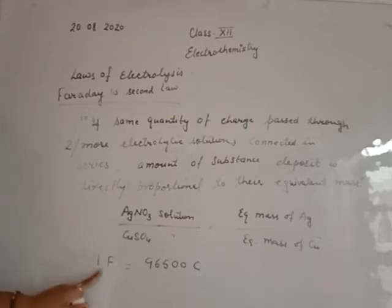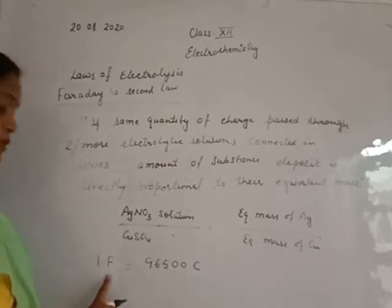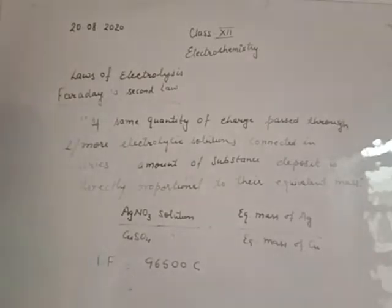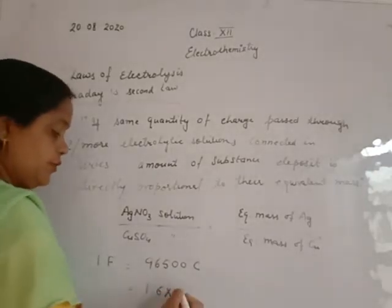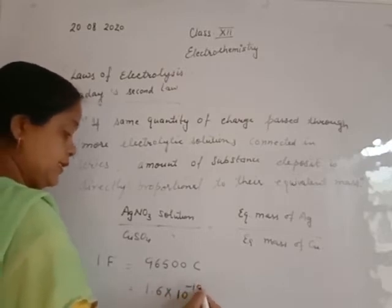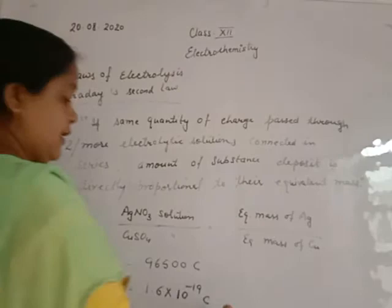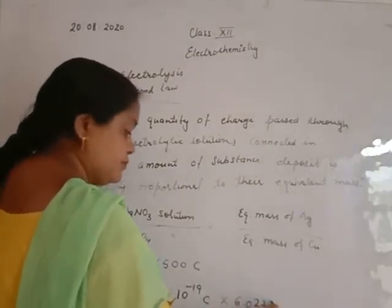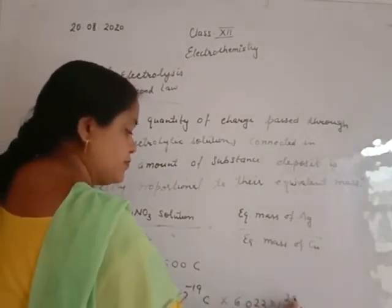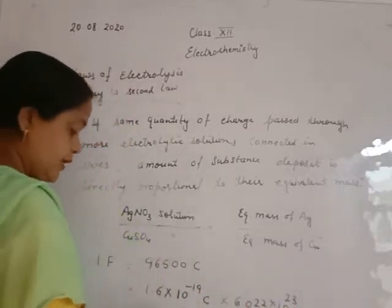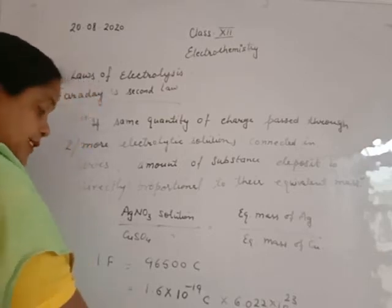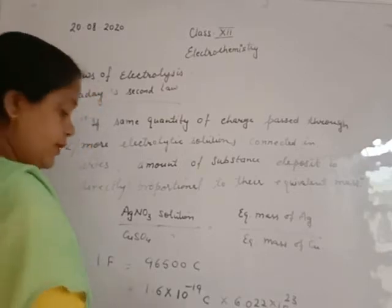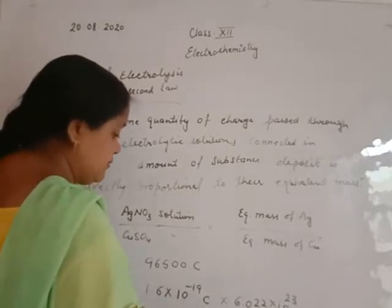The Faraday constant represents the quantity of charge in 1 mole of electrons. The charge of one electron is 1.6 × 10⁻¹⁹ coulombs, and 1 mole corresponds to Avogadro's number of electrons. When we solve this, the exact value of 1F is 96487 coulombs, but approximately we use 96500 coulombs.